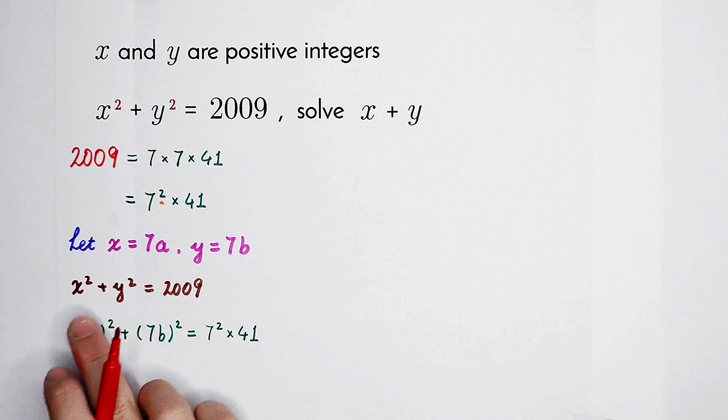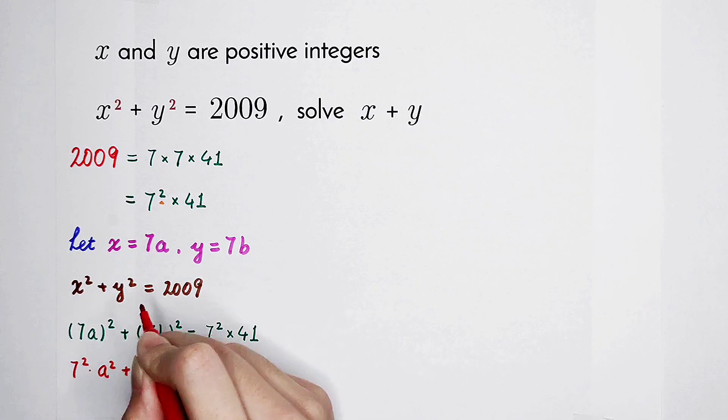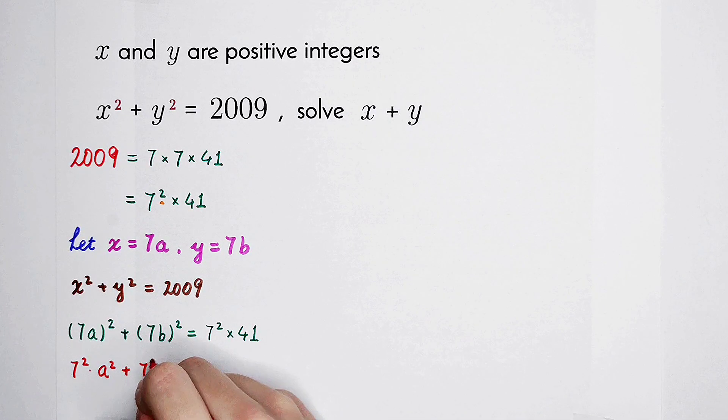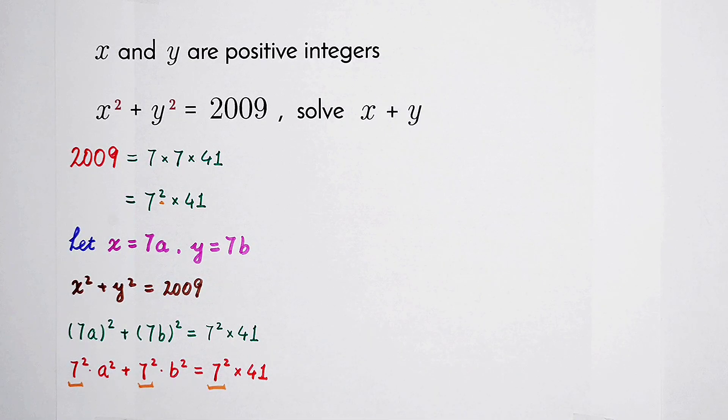7a all squared is equal to 7 squared times a squared. 7b all squared is equal to 7 squared times b squared. And then, 7 squared times 41. We can divide both sides by 7 squared. And then, it will become a squared plus b squared is equal to 41.